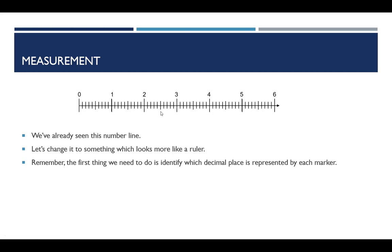The first thing we have to do when we look at this number line is to find out what decimal place is represented by the markers. We know 1's for the big markers. But if we look at the small markers, that's 0, that's 1 — so this would have to be a tenth. It's 1 tenth, 2 tenths, 3 tenths, 5 tenths, 8 tenths, 9 tenths, 1. And this line over here would be 3.5 — 3 and 5 tenths. So the smallest marking here is going to stand for tenths, or the smallest interval is tenths.